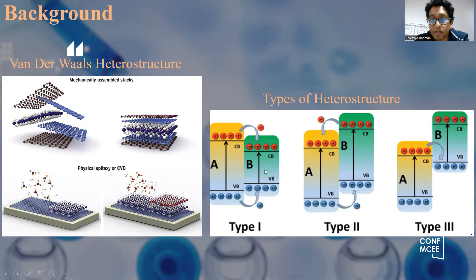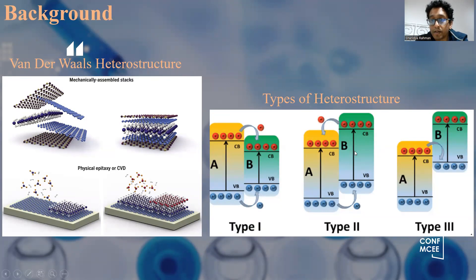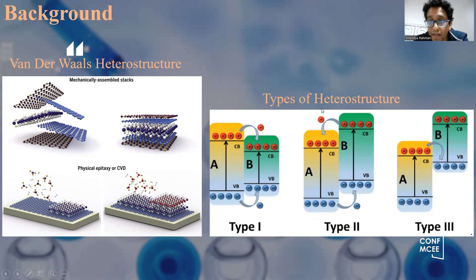Type 1 heterostructures are formed when the band gap of one material is very large relative to the other, completely engulfing it and resulting in unidirectional charge transfer. In type 2 heterostructures, there is bidirectional charge transfer, with movement of both electrons and holes within the conduction band and valence band. By combining two different kinds of materials, we can form many different kinds of functional materials with a wide range of applications.